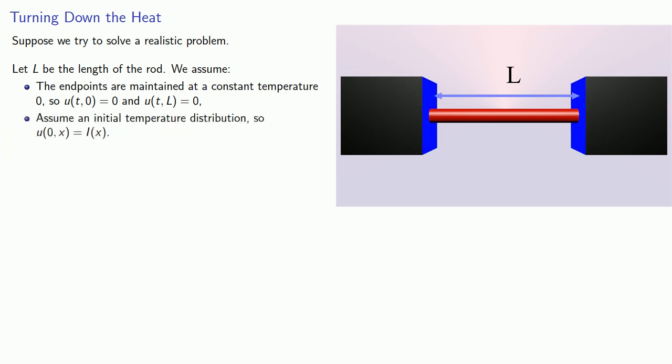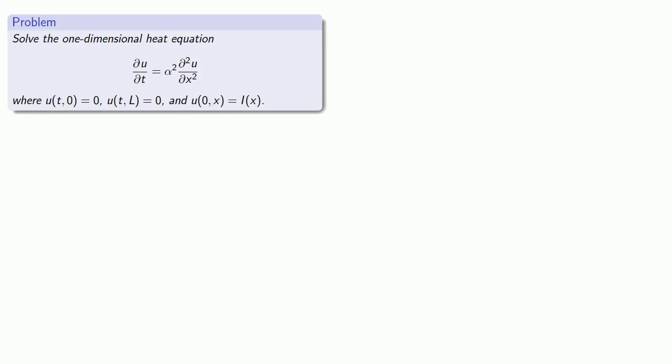Next, we'll assume the rod itself has an initial temperature distribution. So u of 0 x is i of x for some function i. Now our goal is to try and find a function that gives the temperature at any point along the rod at any time t. And so this leads to the problem solve the one-dimensional heat equation where we have a set of boundary conditions.